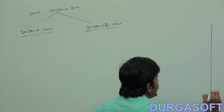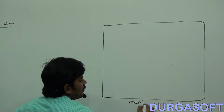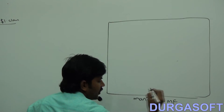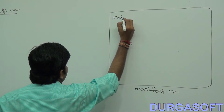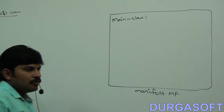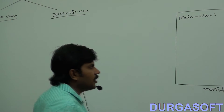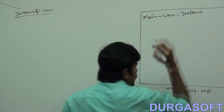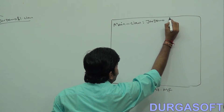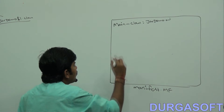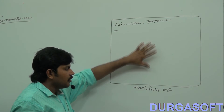You can give any name to this file — manifest.mf, or even abc.txt, no problem. Now, Main-Class: which one is the main class among these two? Which class contains the main method? JarDemo. That's why: Main-Class: JarDemo. Make sure — compulsory — you must press Enter after this line. The cursor must move to the next line, which means a newline character at the end. Otherwise it won't run.